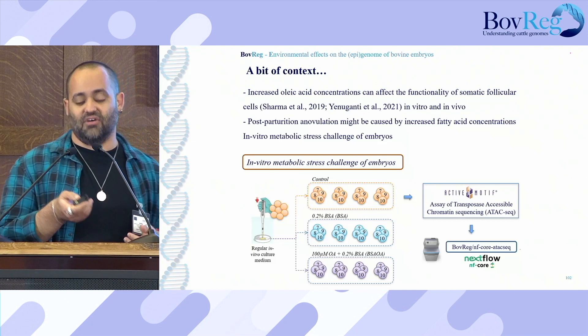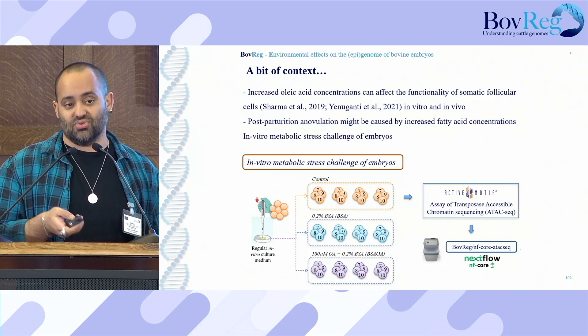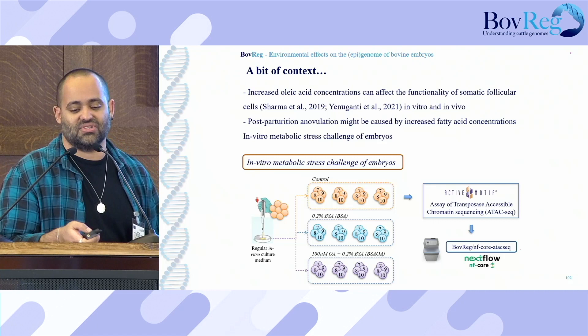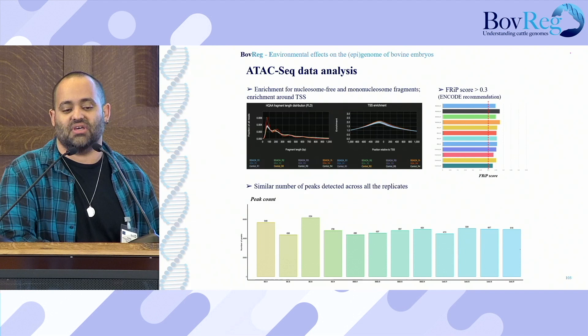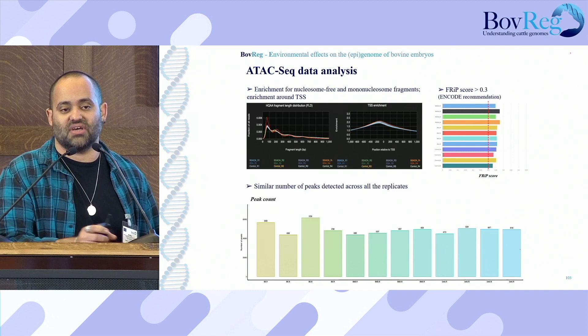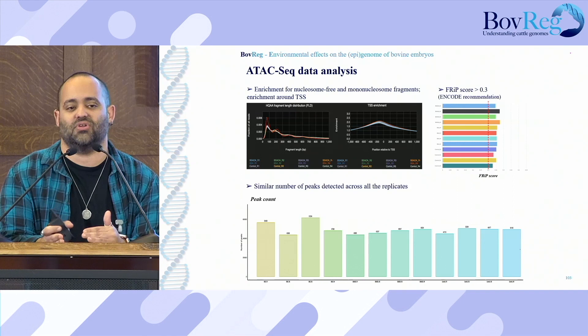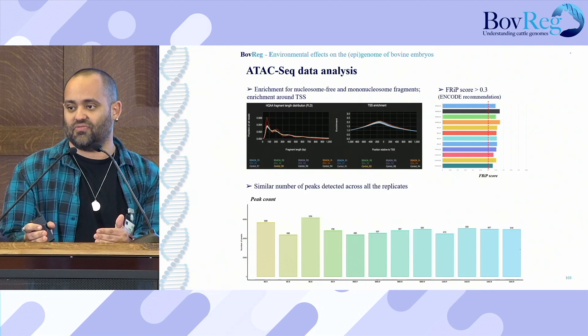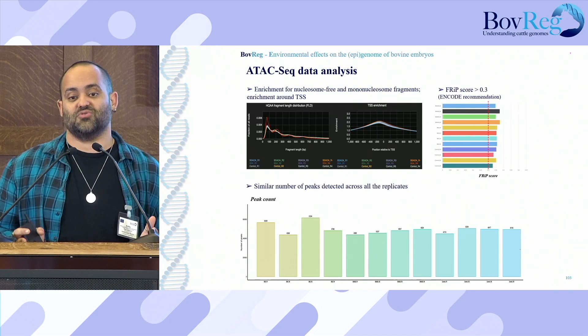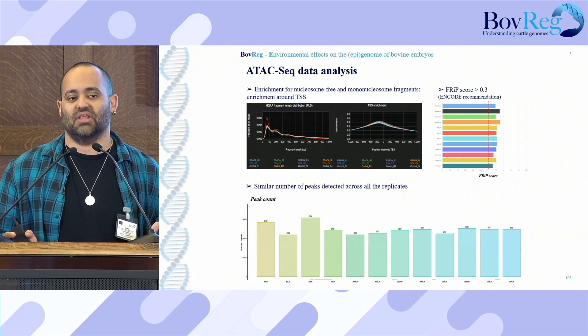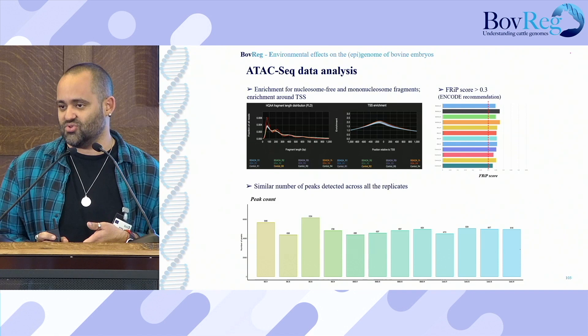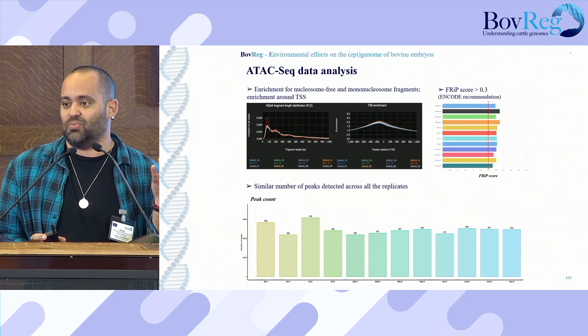We analyzed the data using the NF-Core BOVREG pipeline for ATAC-seq that Jose presented before. Looking at the data generated for this experiment, the first graph shows the insert size distribution in black. We can see two peaks: one around 100–120 base pairs corresponding to the nucleosome-free fraction, and a second peak around 200–220 corresponding to mononucleosomes. ENCODE recommendations require both fractions to be present, and most samples exhibited this expected pattern.